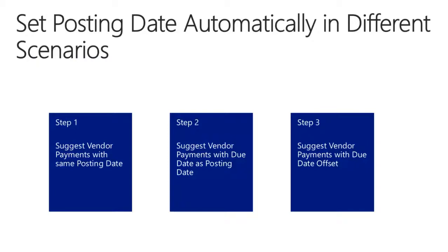When you use the payment journal to pay vendors, the posting date of the payment journal line is the date on which the vendor will be paid. For example, when you create an electronic payment file from the payment journal, the system will take the date from the Posting Date field and insert it as dispatch date in the electronic payment file. As default, when you create payment lines using the Suggest Vendor Payments batch, this date is automatically filled with the work date in the system.